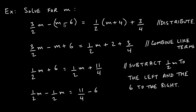The 3/2 m just comes down unchanged. Distributing the negative flips all signs inside: negative times m becomes −m, and negative times −6 becomes +6. Distributing 1/2 into (m + 4): 1/2 times m gives 1/2 m, and 1/2 times 4 gives 2. The plus 3/4 just comes down — nothing to distribute there.